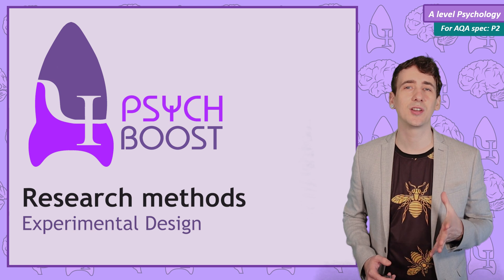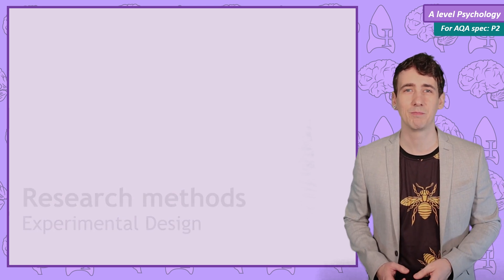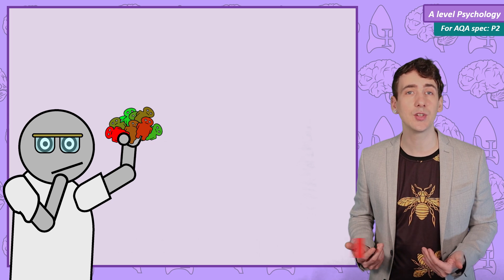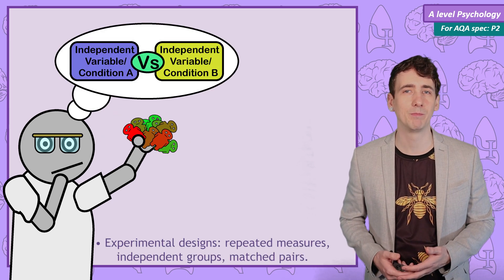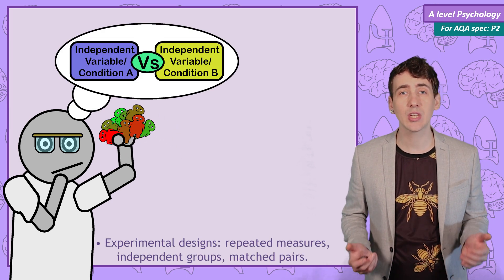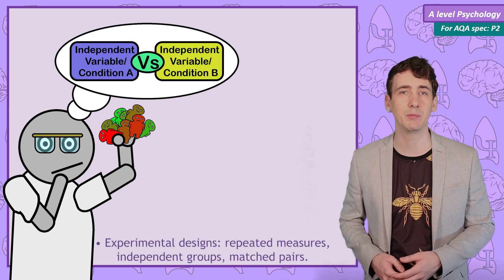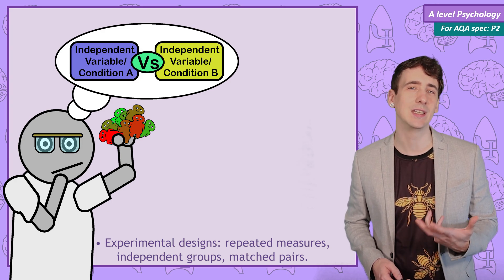This research methods and psychology video will cover experimental design. It's about exactly how we use the participant sample in combination with the different levels of the independent variable. The researcher has choices in how they set up the experiment, but of course there are positives and negatives to each design.